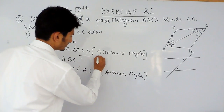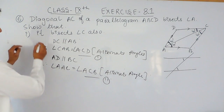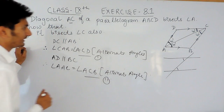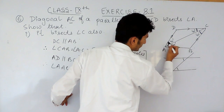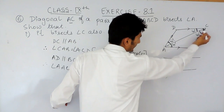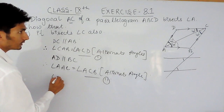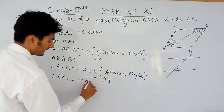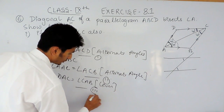This is our first equation and this is our second equation. It is given to us that AC bisects angle A. This means angle DAC must be equal to angle CAB. So angle DAC equals angle CAB — this is given to you, and this is our third equation.